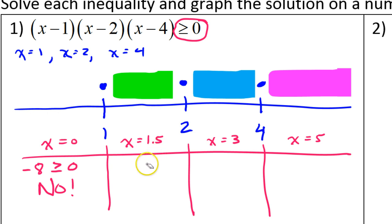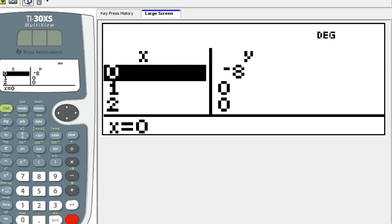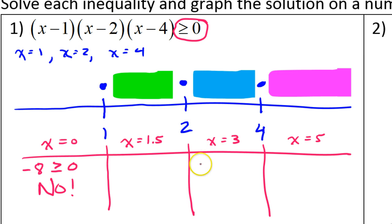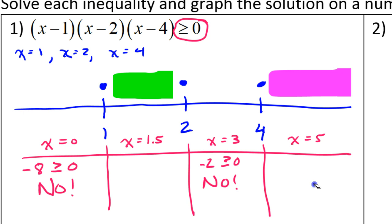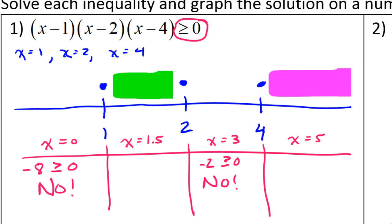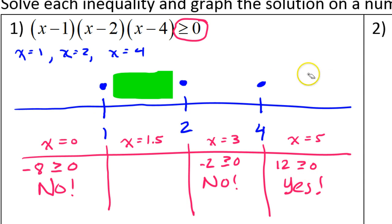I'm going to come back to 1.5 because we have to do something a little different since it's a decimal. Let's go ahead and look at three. At three, I've got negative two. Is negative two greater than or equal to zero? No — negative numbers are less than zero. So there will be no solutions in the blue zone. What about at 5? At F5 we got 12. Is 12 greater than or equal to zero? Yes. That means we have solutions in the pink zone. When you have solutions, you draw them as either a segment or a ray — since it's going to infinity, it's a ray.